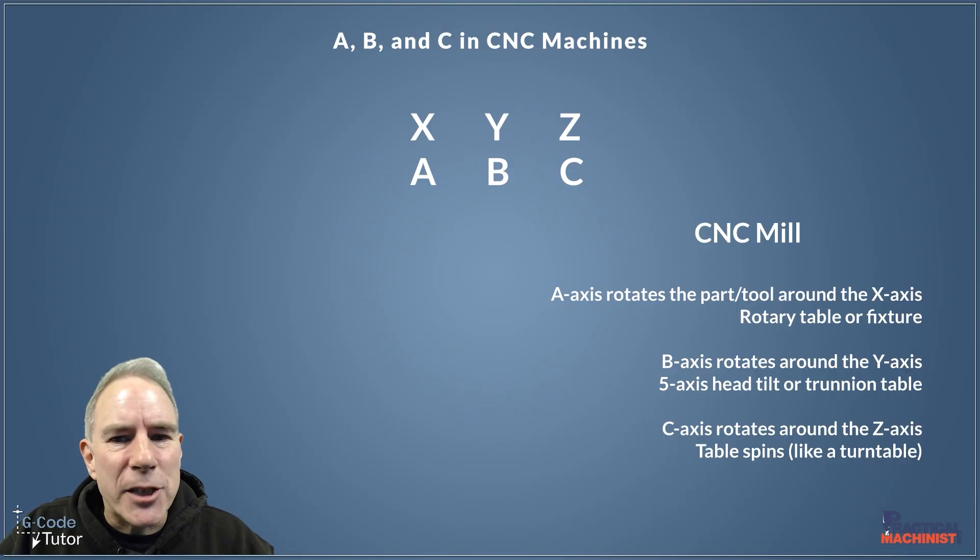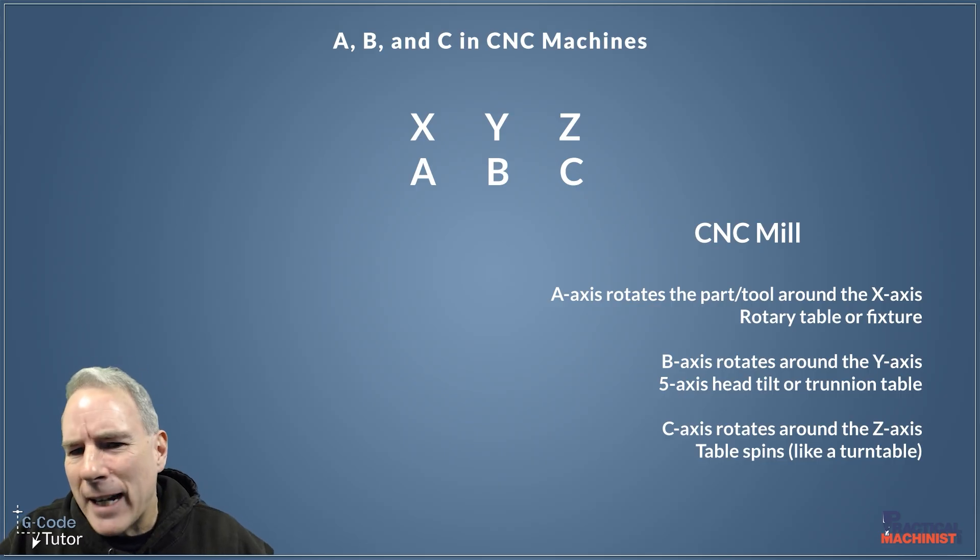So on a CNC milling machine here, our A axis rotates around the X. Our B axis rotates around the Y. And if we got a five-axis head, it would control that, maybe, depending on the machine.